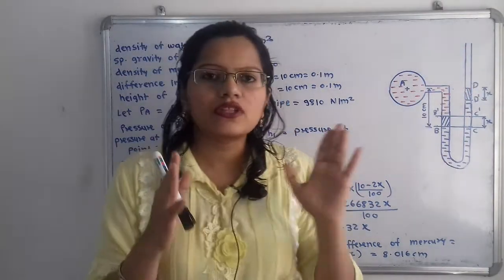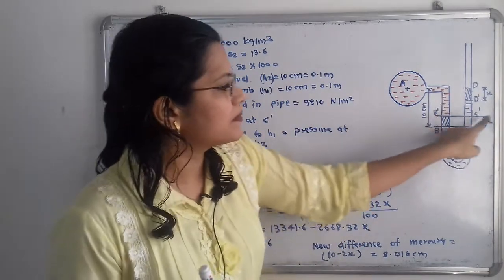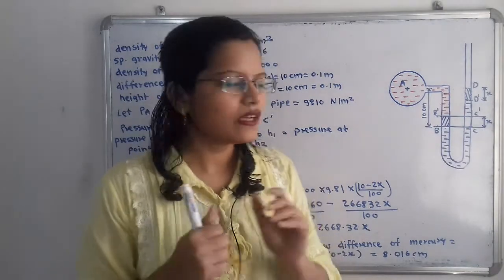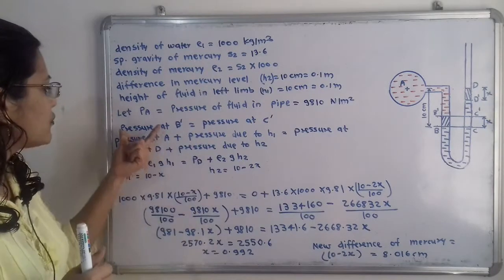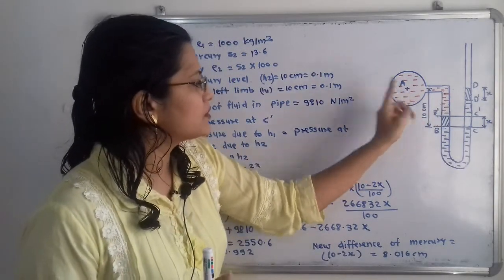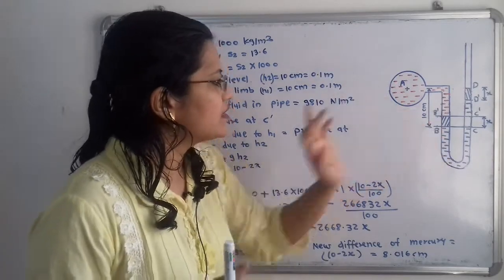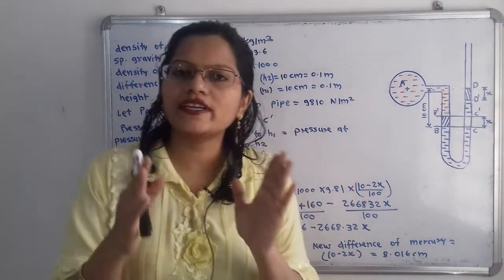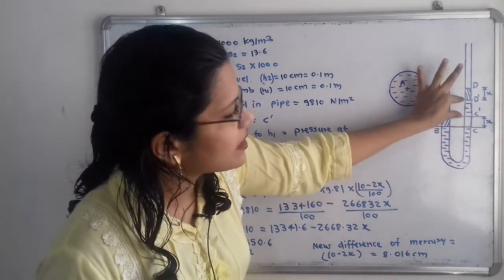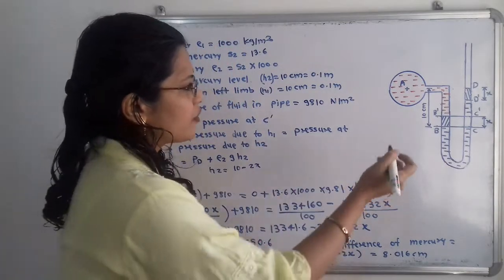According to the new diagram, the new datum line is B'C'. We balance the pressure at this new level: pressure at B' equals pressure at C'. Pressure at B' equals the pressure at pipe center A plus the pressure due to new height h₁. Pressure at C' equals the pressure at point D' — which is open to atmosphere — plus the pressure due to new height h₂ of mercury above C'.